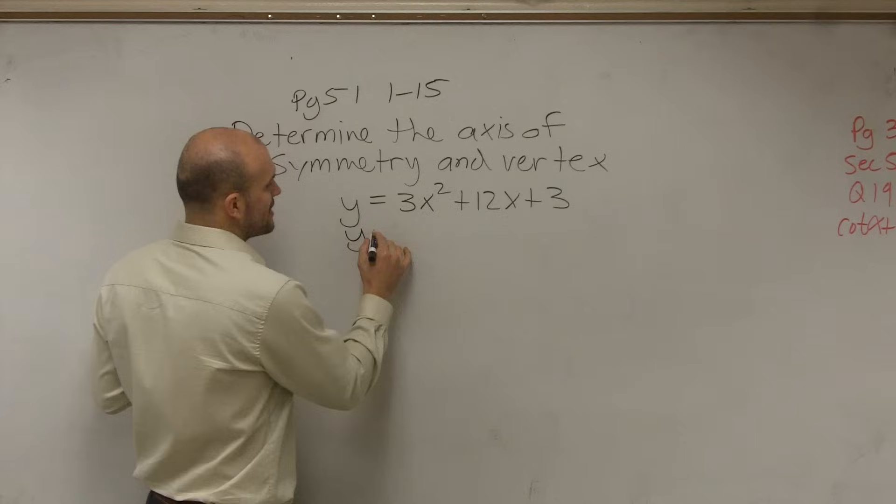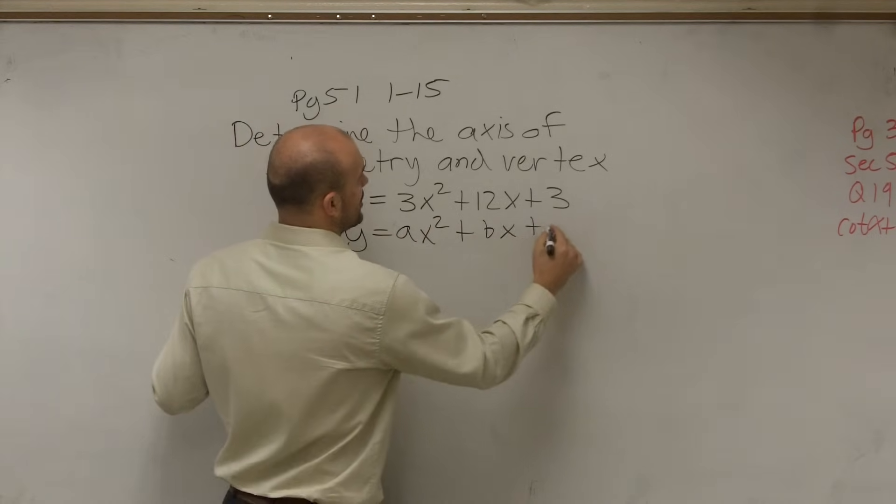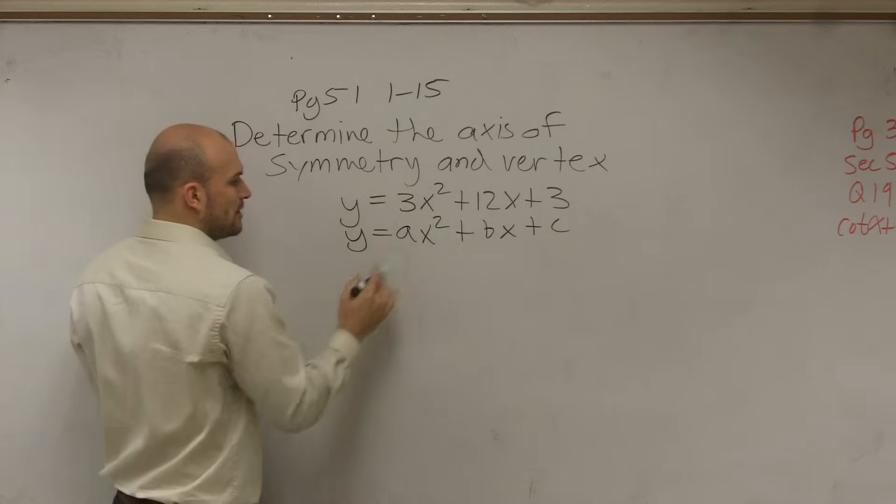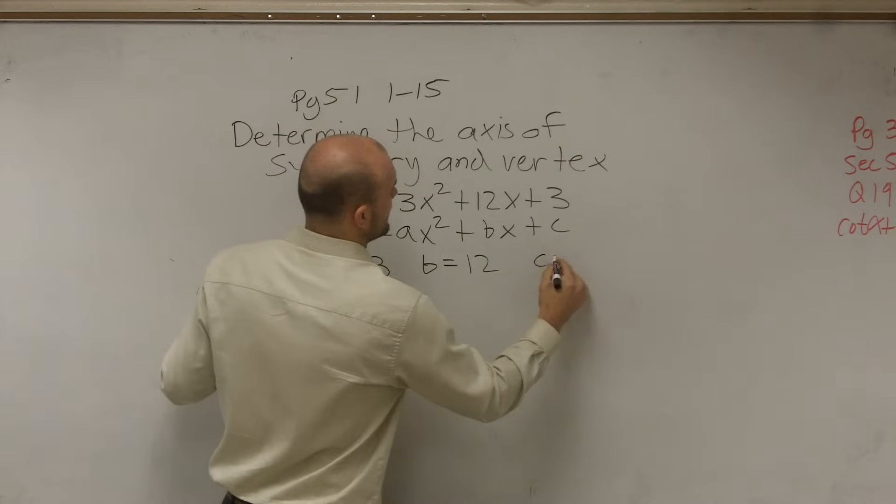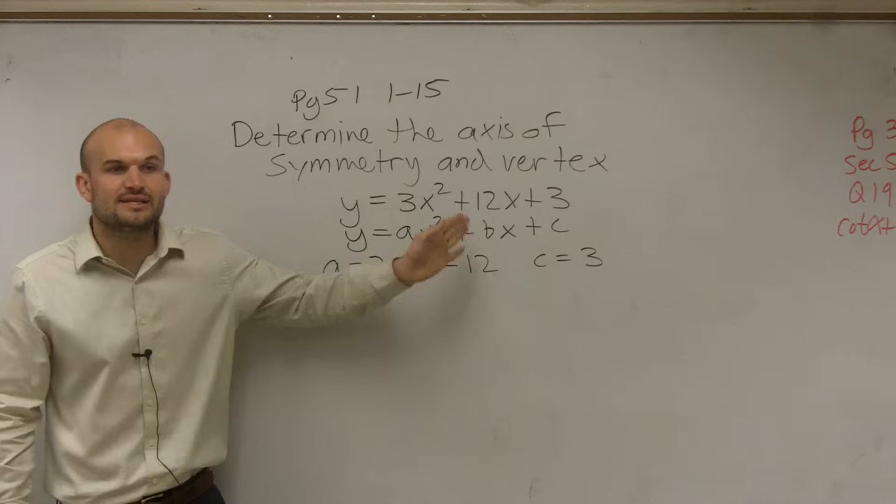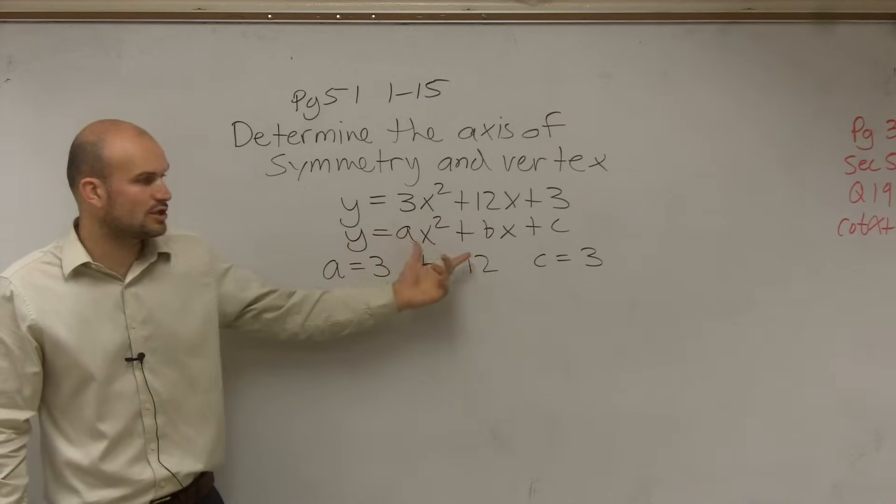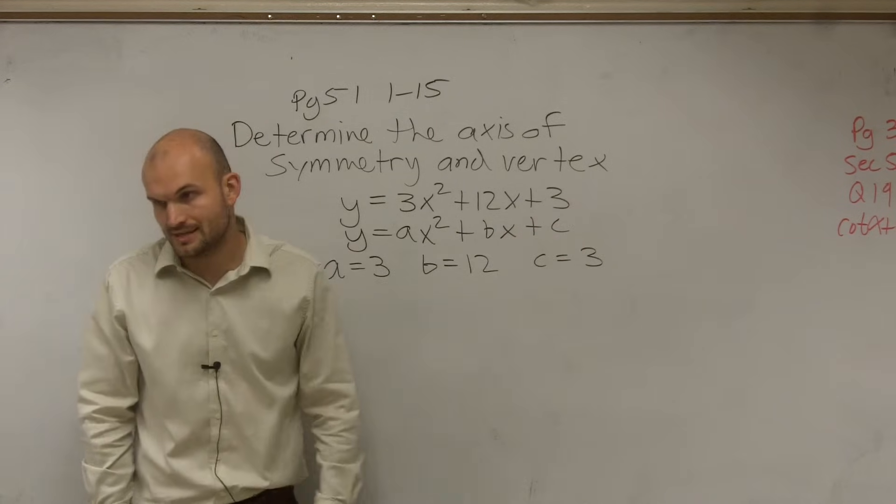Remember, every quadratic equation can be written in the form of ax squared plus bx plus c. Therefore, in this problem, we can say a equals 3, b equals 12, and c equals 3. As each one of these values are real numbers and either the coefficients of our quadratic or linear term or our constant.